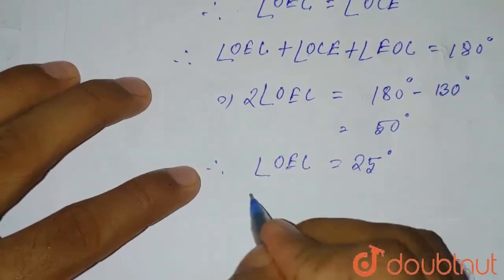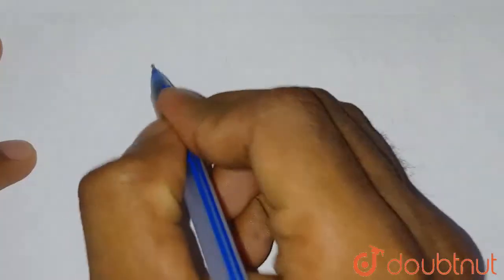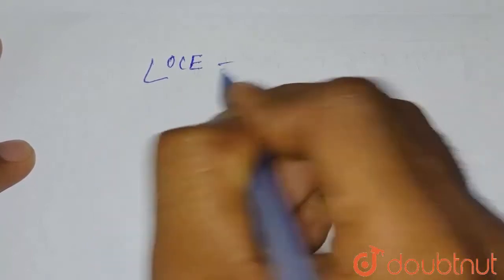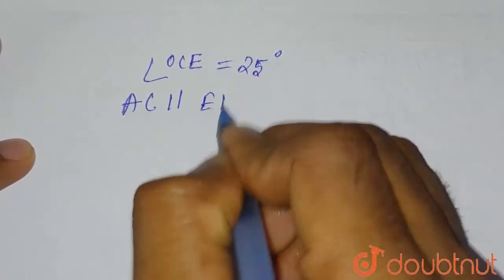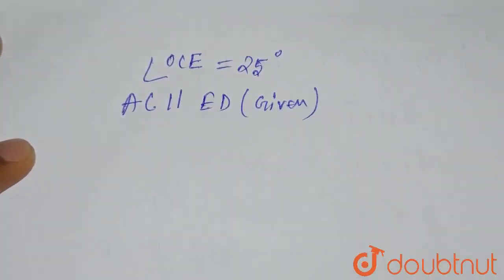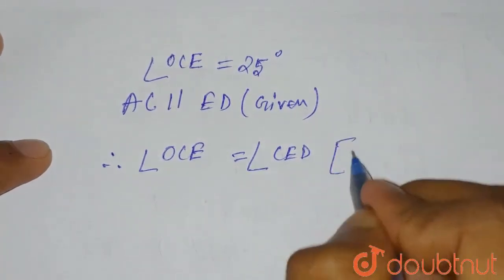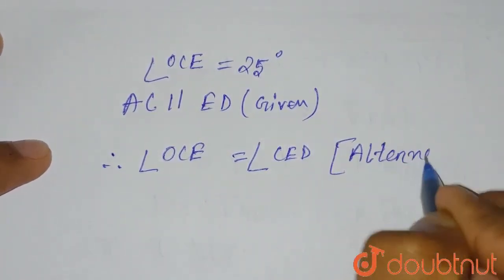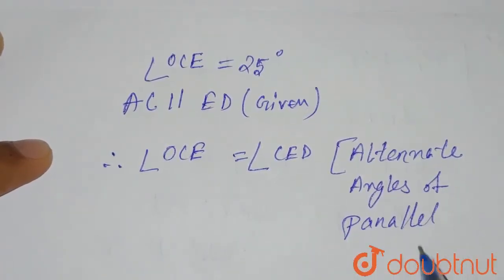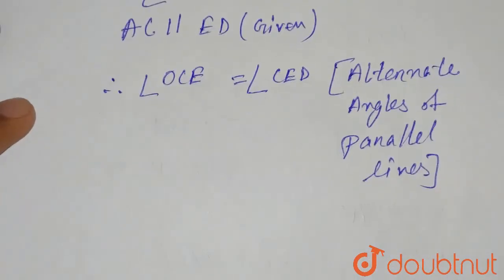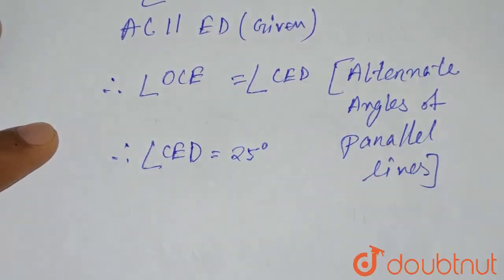Therefore, angle OCE equals 25 degrees. Since AC is parallel to ED, angle OCE equals angle CED because they are alternate angles of parallel lines. Therefore, angle CED equals 25 degrees. This is the required solution.